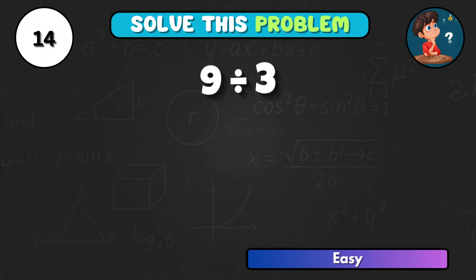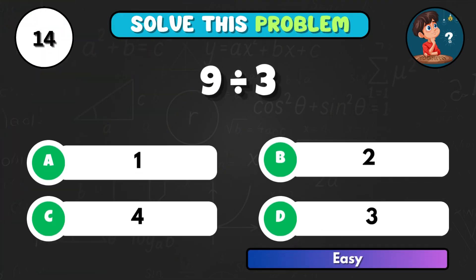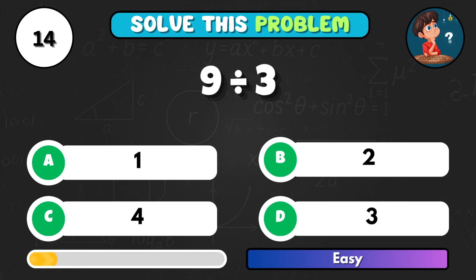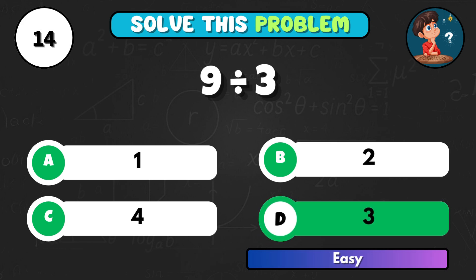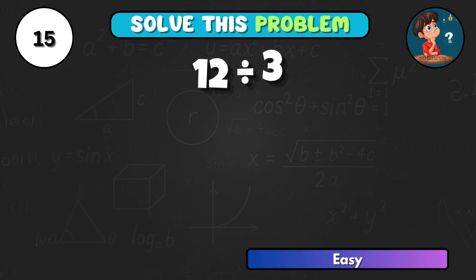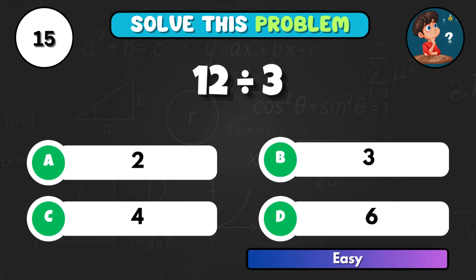Let's step it up. 9 divided by 3, what's your total? Correct letter D equals 3. 12 divided by 3, what do you get? That's C equals 4.